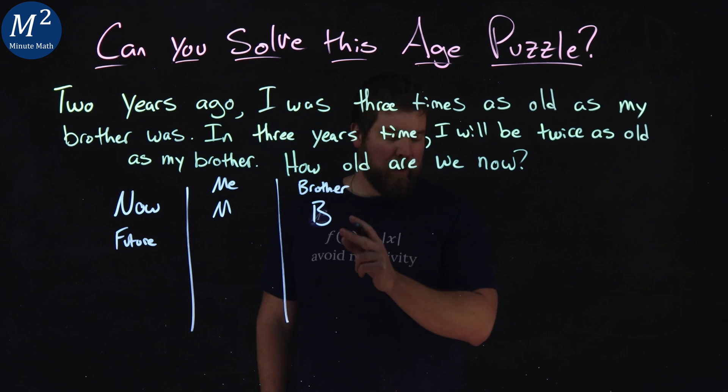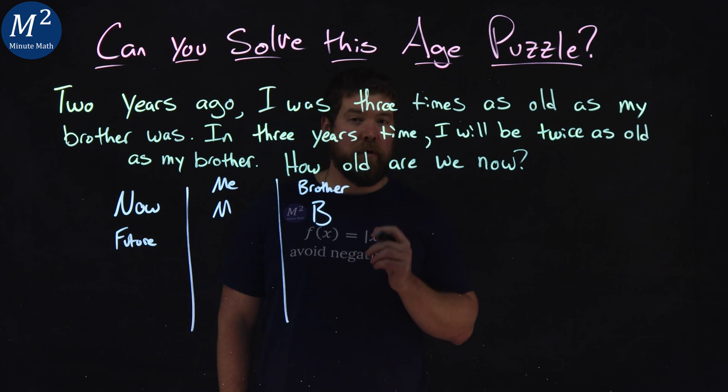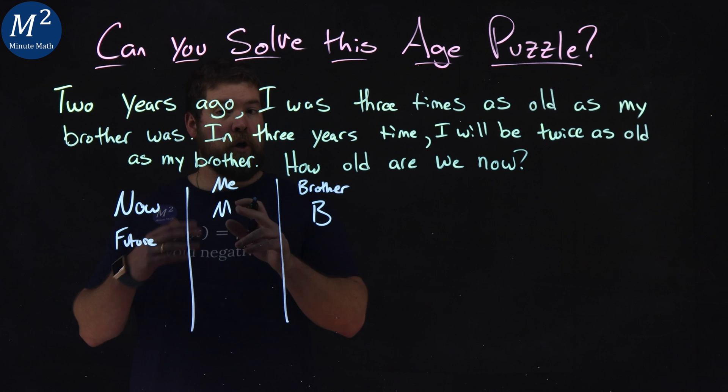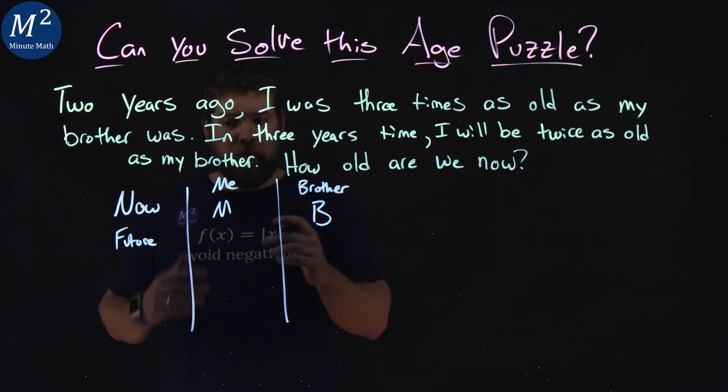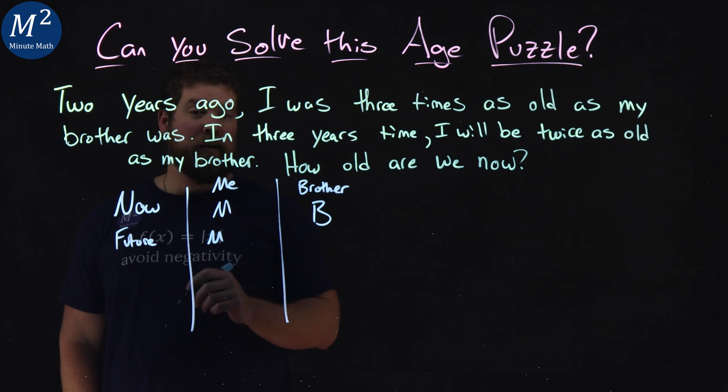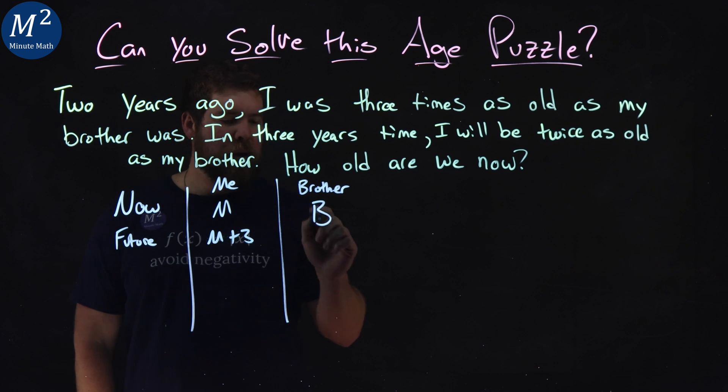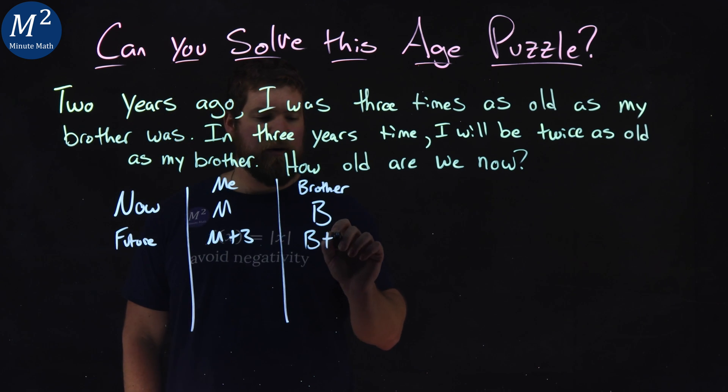So in three years time, I'll be twice as old as my brother. If we take my current age, I'd be three years older in the future. So my age would be M plus three, and my brother's age would be B plus three.